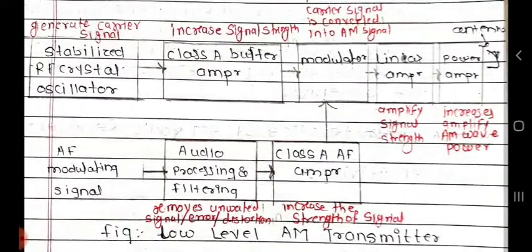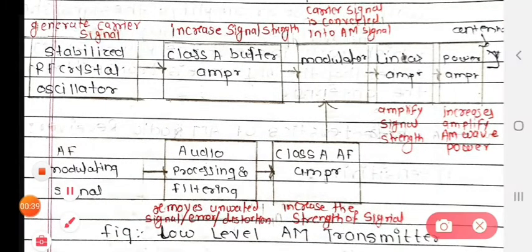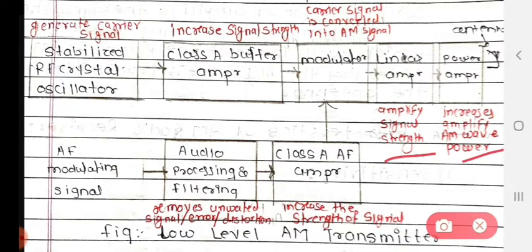The block functions written in red color are shown in the block. This is written in short for you to understand — it is not written in the main block diagram. So when you draw the block diagram in the exam, this red text will not be on it.